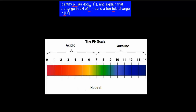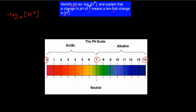So pH is minus log to the base 10 of the concentration of hydrogen ions. We've got pH of 7 here — we know 7 is about neutral, 0 means quite acidic, and 14 is quite basic. Everything in between is either weakly acidic, somewhat strongly acidic, weakly basic, or somewhat strongly basic.